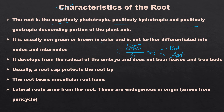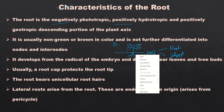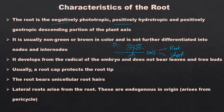This is the descending portion of the plant axis. If I say it is negatively phototropic, that means it grows away from sunlight. Suppose this is the sun — the root is growing below the soil, away from sunlight, so it is negatively phototropic. Positively hydrotropic means roots are always in search of water. They are positively hydrotropic and positively geotropic — it is growing in the direction of gravity.